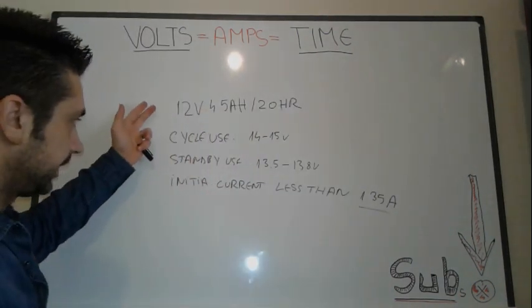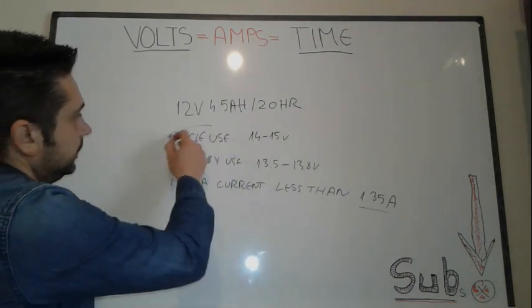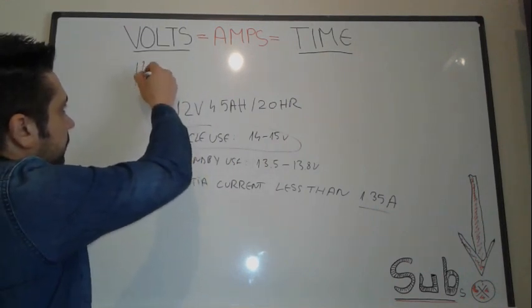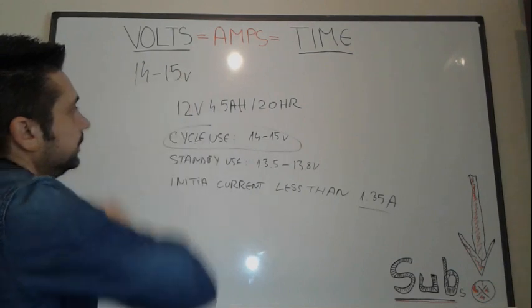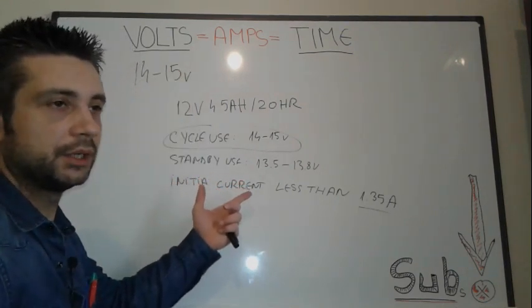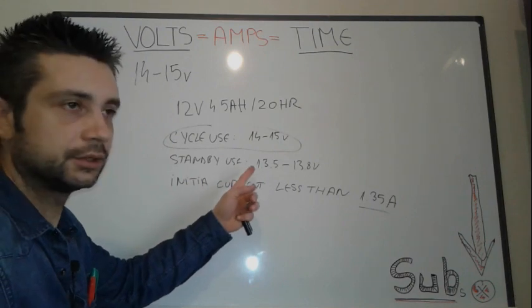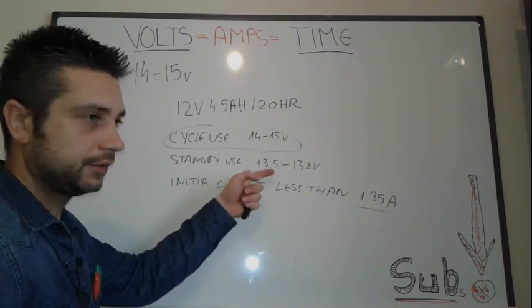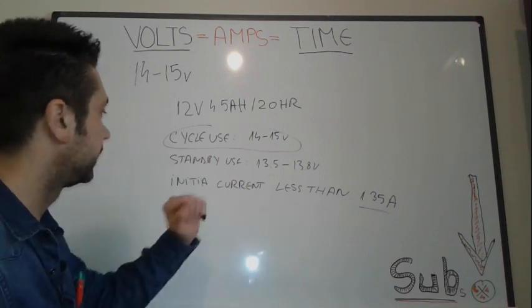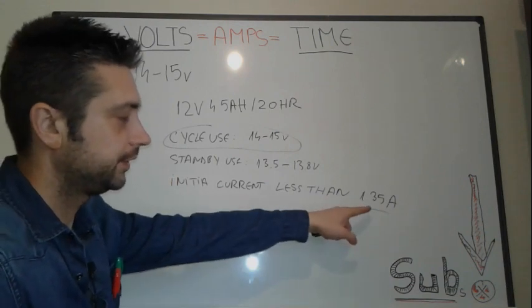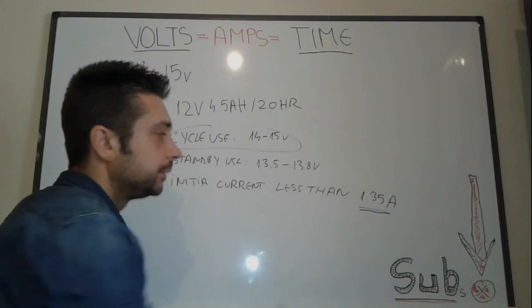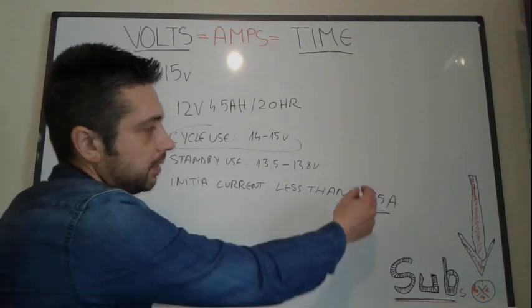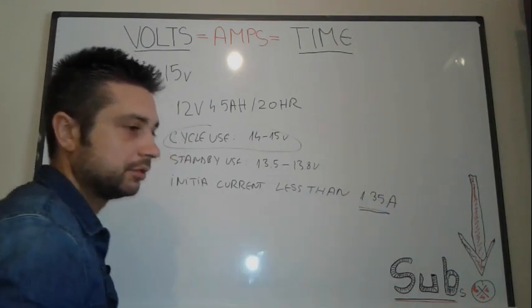Cycle use is 14 to 15 volts. Standby use, this is gonna be when the battery is full, so this doesn't do any good for us. This is just in case a smart charger is gonna read this voltage and tell you if it's full, halfway or low. Initial current less than 1.35 amps is very important because it tells you not to go with a charger above this 1.35.